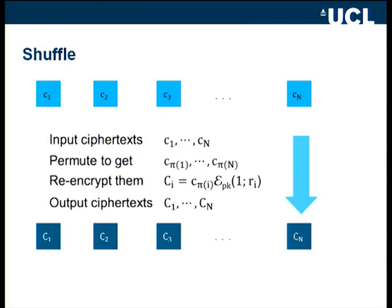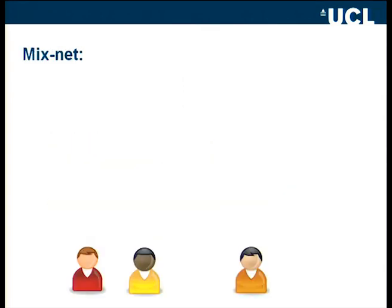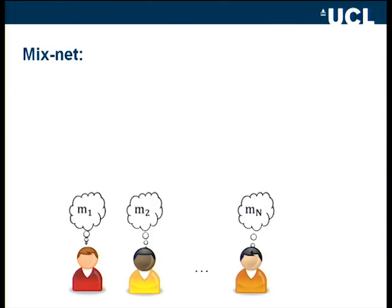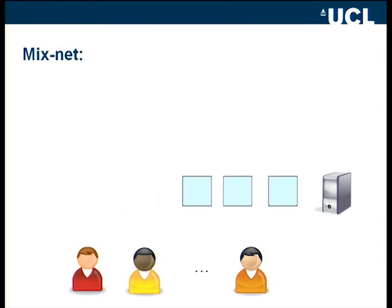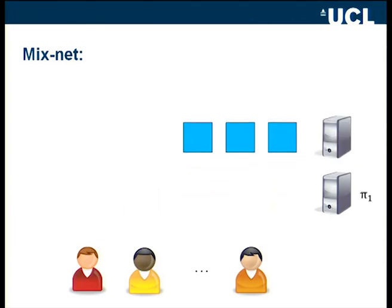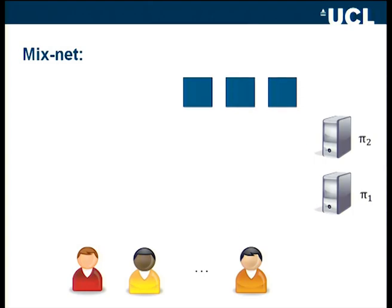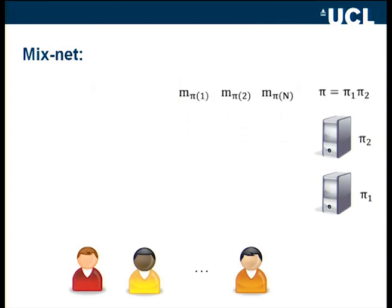In our setup, the voter sends votes to a server which shuffles them and sends them to the central authority. To make this more secure we use a mixnet: voters encrypt their votes and send them to the first server, which picks a permutation, shuffles everything, and sends it to the next server, which again picks a permutation and shuffles. In the end, everything gets decrypted using threshold decryption, ensuring all parties must work together and nobody can break the anonymity. The output messages are in permuted order; the overall permutation pi is a product of all individual permutations, so nobody knows the whole permutation and nobody can link a message to a person.